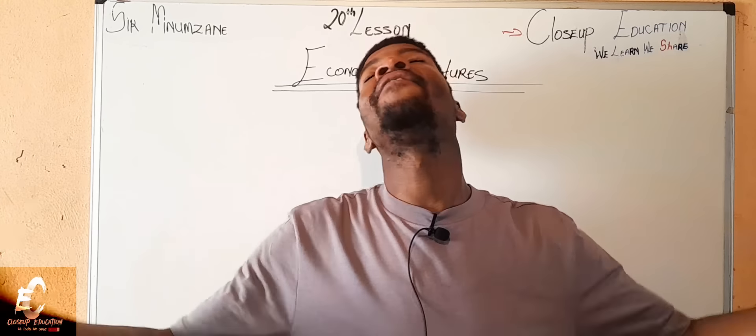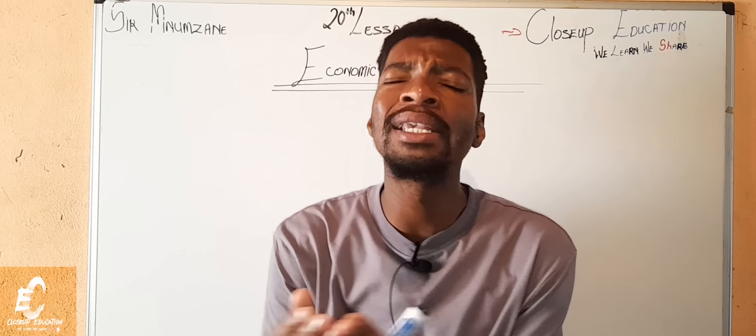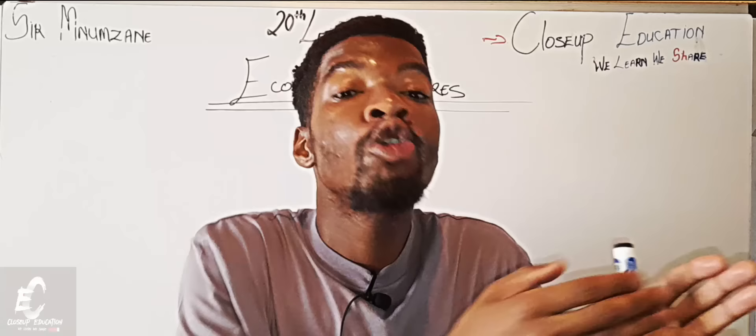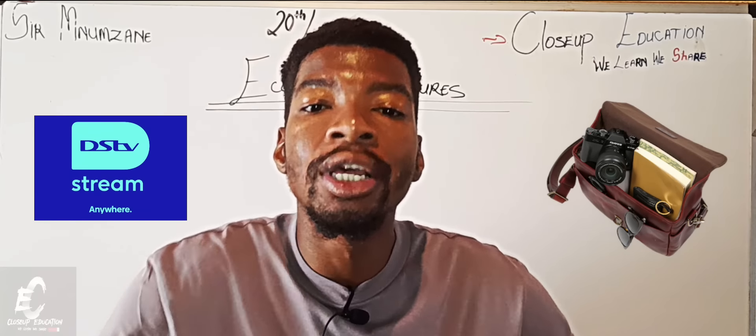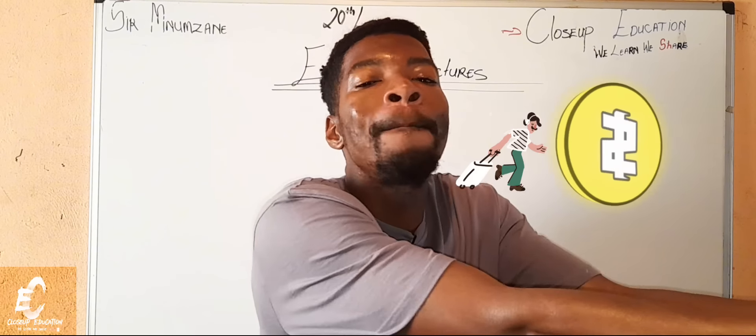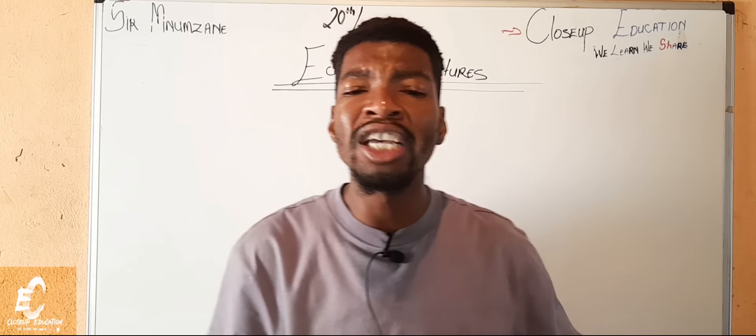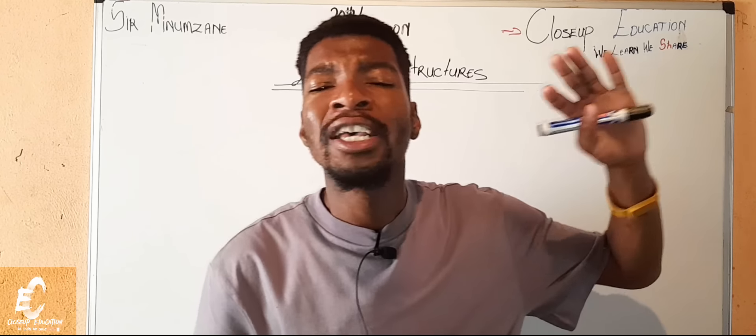So today we'll be moving into our economic structures. We have to understand what holds what we call the economy. Economy simply means it is a system or a process whereby goods and services are produced so they could be sold or bought by a particular country or a region. That whole process of selling and producing goods is called the economy.